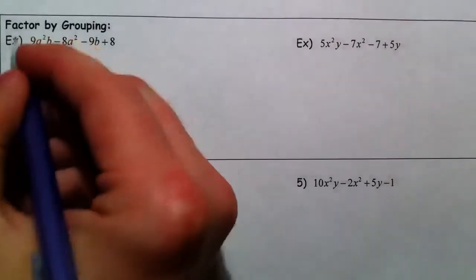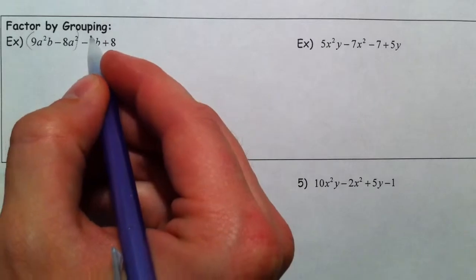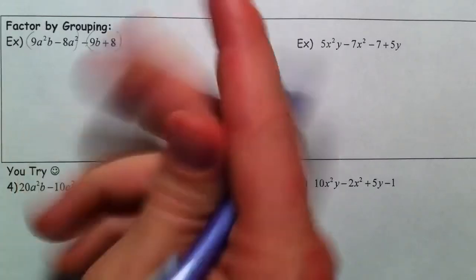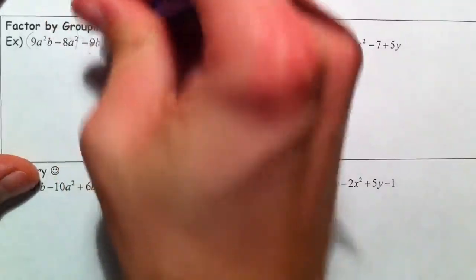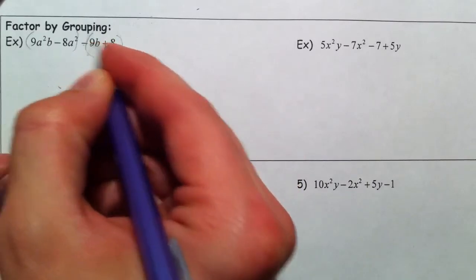Now, we're going to group them by using parentheses, but you need to be careful where you put these parentheses because if you just put this like this, you've changed the value of it. So here's what I usually do, because if you put it right here, that represents minus 9b and minus 8.